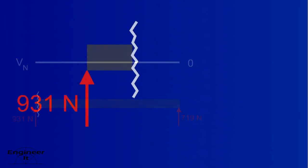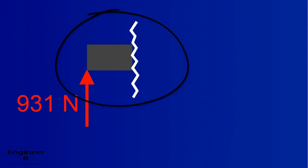Drop everything on the other side of the cut from the picture. Imagine this piece to be infinitely small, similar to a differential area. If this were a free body diagram, there would need to be an equal and opposite force to balance it — and there is. It's called the internal stress, or the shear force.